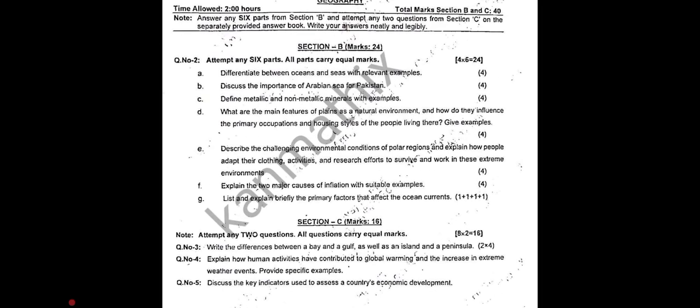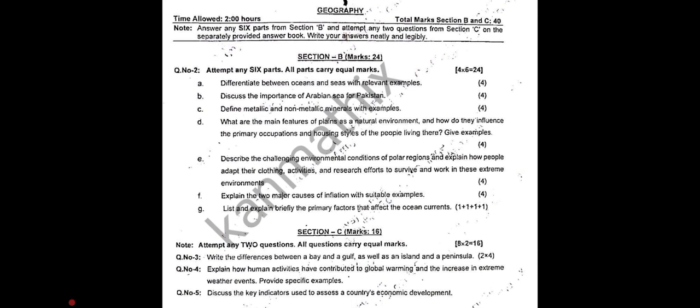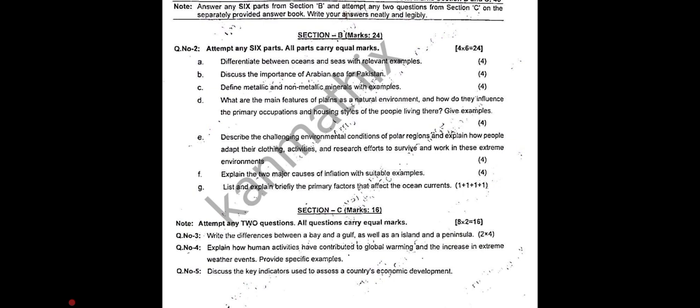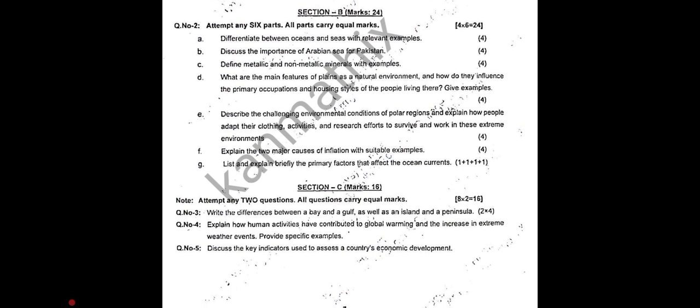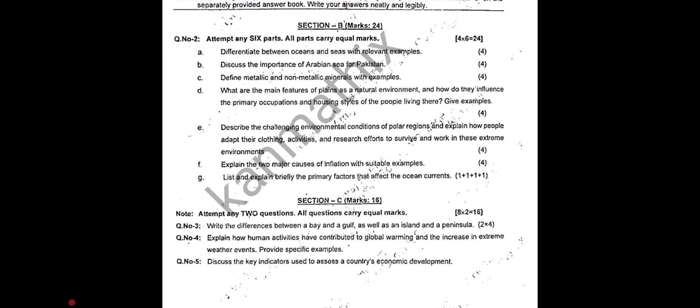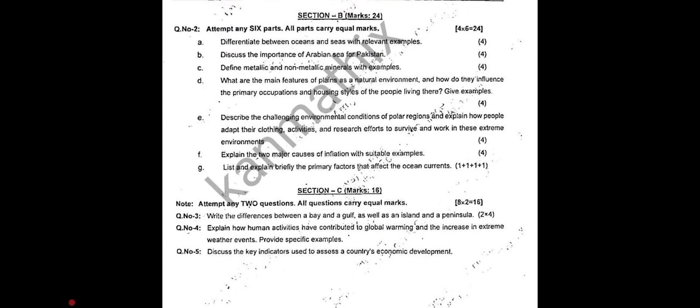Question number 2: attempt any six parts, all parts carry equal marks. The questions include: differentiate between oceans and seas with relevant examples; discuss the importance of the Arabian Sea for Pakistan; define metallic and non-metallic minerals with examples; and what are the main features of plains as a natural environment and how do they influence the primary occupations and housing styles of the people living there?